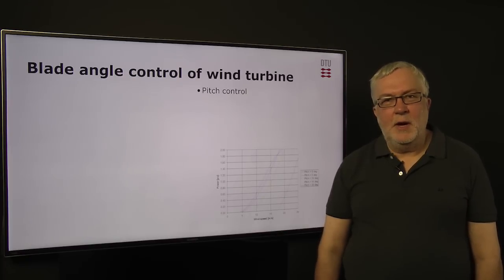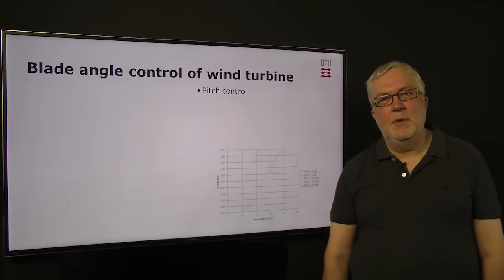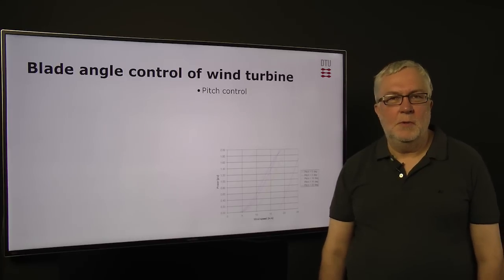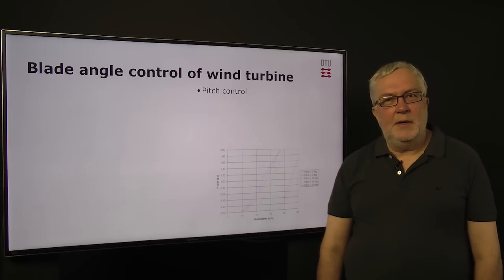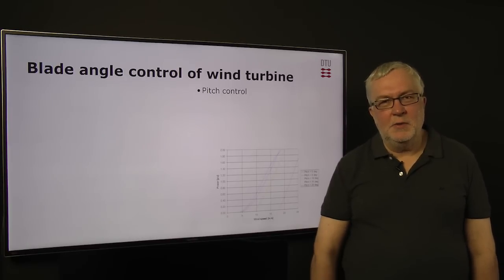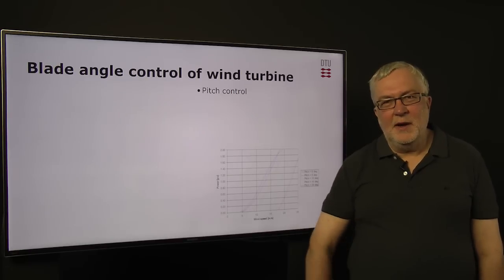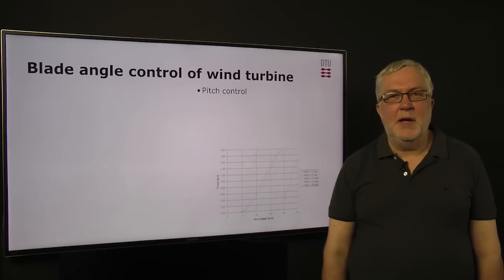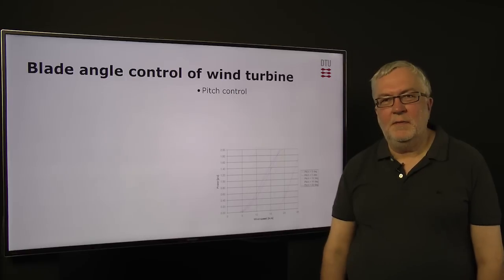So, blade angle control. This is where we are going to talk about the difference between pitch control and active stall control. Both of them are controlling the angle of the blade, but one is controlling to one side up in the wind—this is the pitch control—and the active stall control is controlling out of the wind.